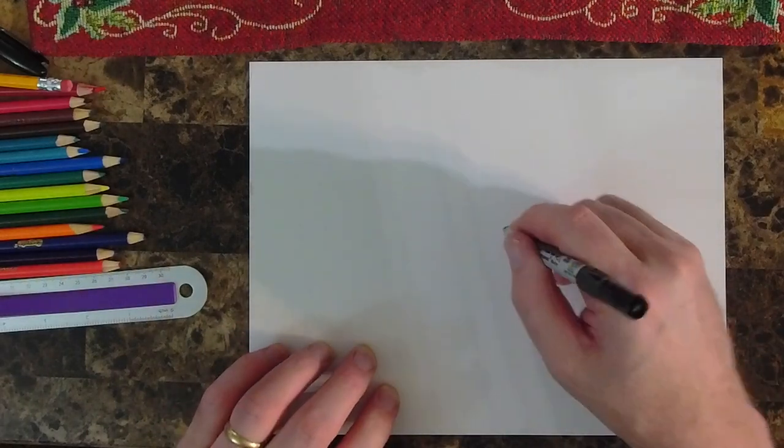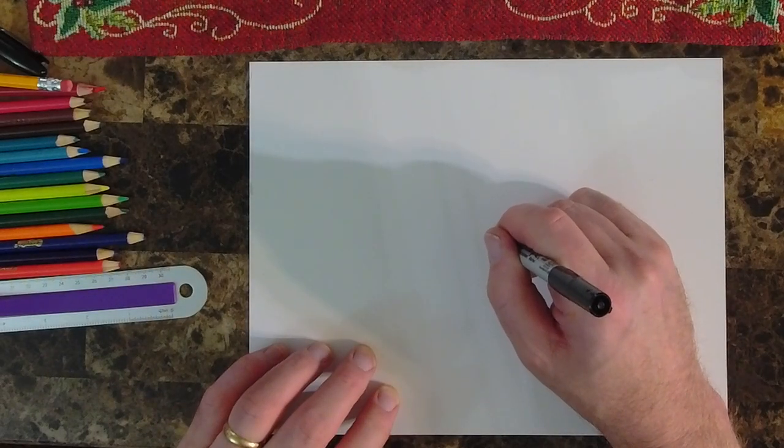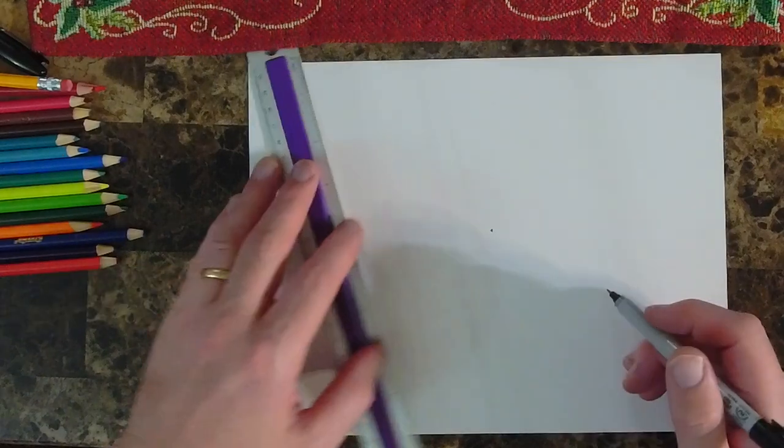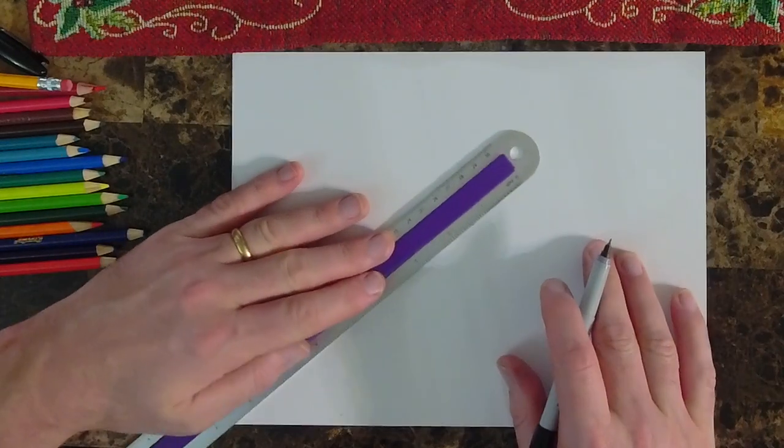We're going to be using contour and we're going to be using value. Value is one of the seven elements of art. Value deals with the lightness or darkness of a color. Since we see objects and understand objects because of how dark or light they are, value is going to be incredibly important to art.